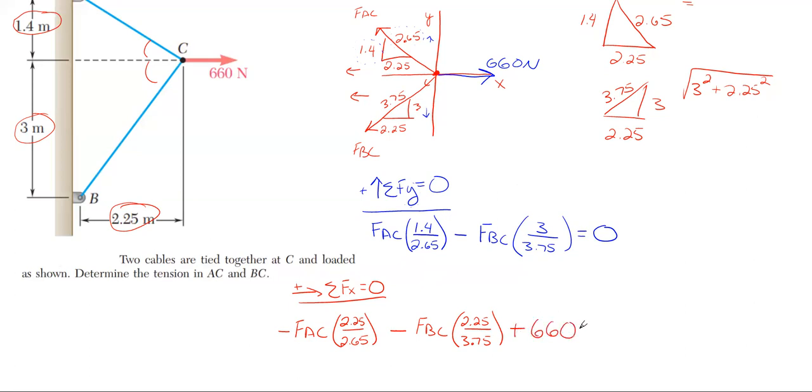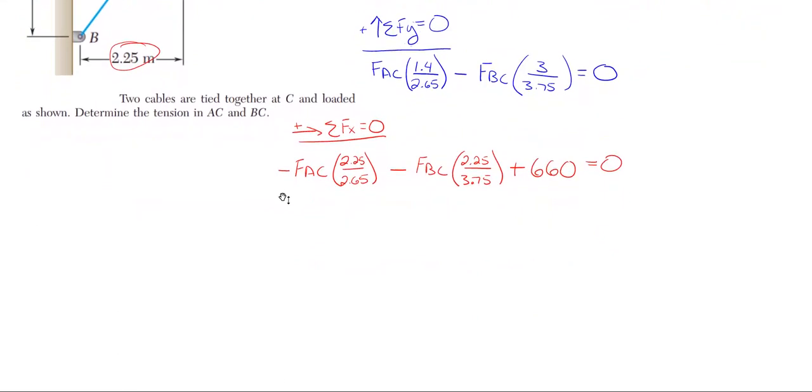And then we also have this 660 Newtons and it'll be going to the right. So it's positive 660 Newtons is equal to zero. I really don't need my free body diagram anymore. Once I have completed my two equilibrium equations here, because I've translated my picture into a free body diagram and then my free body diagram into these two equilibrium equations. Looking at the X equation can't solve anything by itself. Same thing for the Y. But if we look at them both, we have two equations with two unknowns and we can solve for either FAC or FBC at the beginning here.